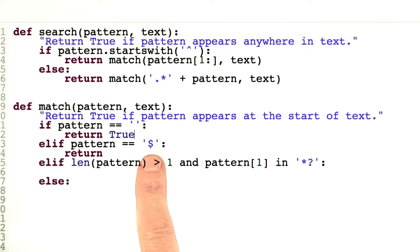If the pattern is the dollar sign, that means that matches only at the very end of the text. So we want to return true only if the text is the empty string. So we say return, does the text equal the empty string? True if that's true, false if that's false.